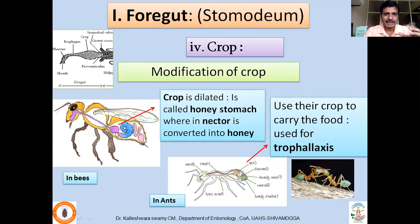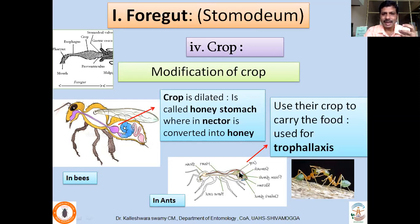In bees, the crop is dilated and swollen where nectar is stored temporarily; fermentation takes place there and nectar is converted into honey, so the crop is also called the honey stomach. In ants, food is also stored in the crop but for a different purpose — they have the ability to regurgitate and give food to other colony members. This mouth-to-mouth transfer of food is called trophallaxis.